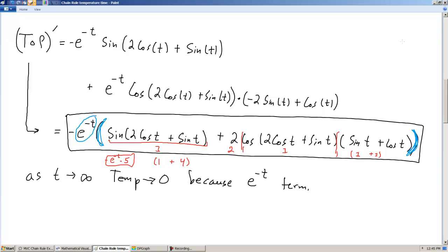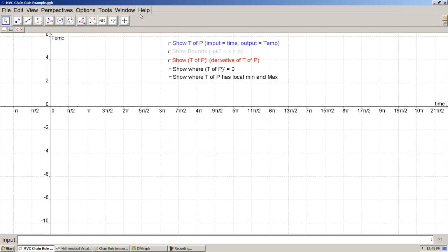Alright, now let's interpret this in two dimensions. This is a two-dimensional function. Input is time, output is temperature. I've already graphed it in our favorite graphing program here, GeoGebra. So let's just go through and look at it.